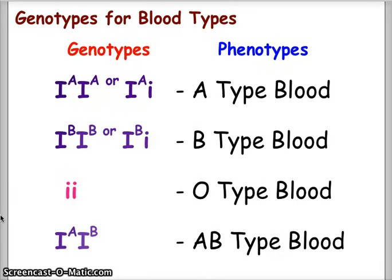For the four blood types, the genotypes are as follows. For phenotype A type blood: homozygous I^A I^A, or heterozygous I^A i. For B type blood: homozygous I^B I^B, or heterozygous I^B i. The recessive i i gives you phenotype O type blood. And I^A I^B gives you the unique AB blood.